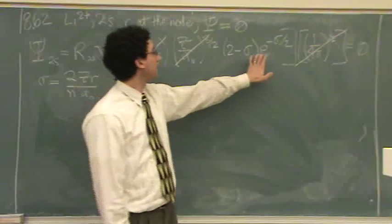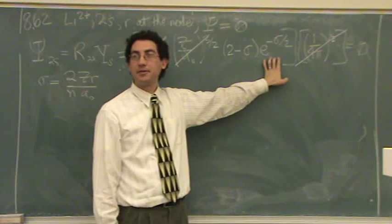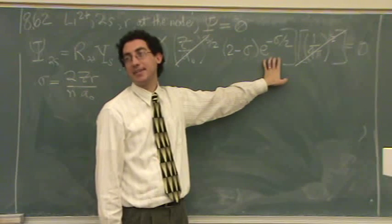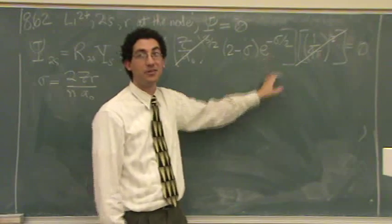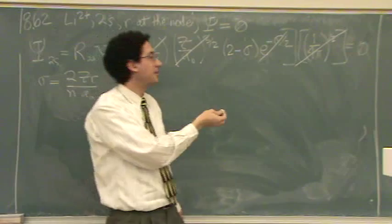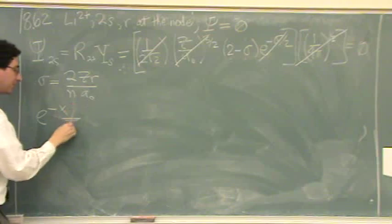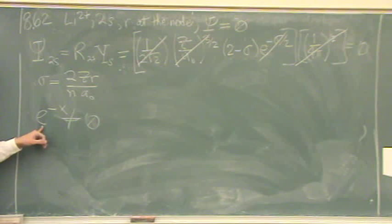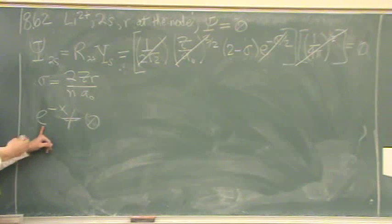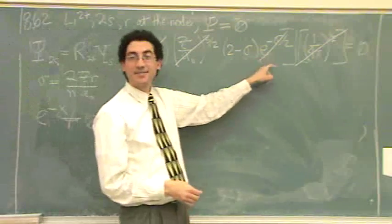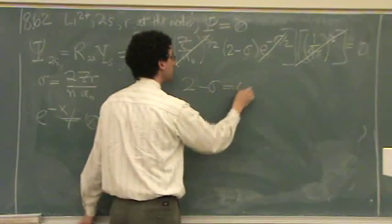Here comes the tricky part. Can e^(−x) ever equal zero? It can at infinity if you want, but in practical circumstances, no. If it's never zero, it's meaningless. So e^(−x) never equals zero — I'm going to get rid of it. For most students this is the weirdest part. e is a constant — it's the natural log e, 2.71828... So that term is eliminated. Now look what's left: (2 minus σ) equals zero.